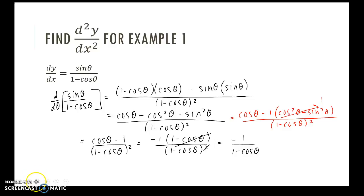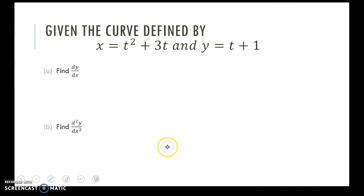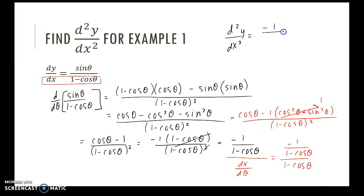But we have that added step. So now I have to take this and divide it by dx/d theta. And dx/d theta is our original. We already found that to be 1 minus cosine theta. So negative 1 divided by 1 minus cosine theta, so now we'll multiply by the reciprocal and my final answer, the second derivative is negative 1 all over quantity 1 minus cosine theta squared.